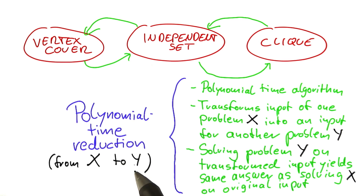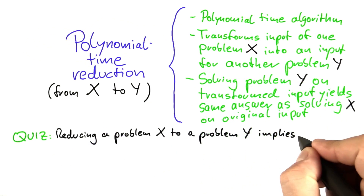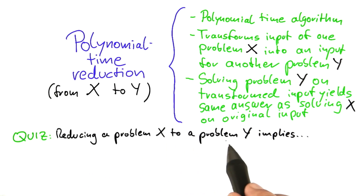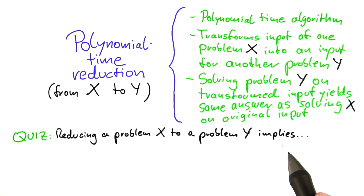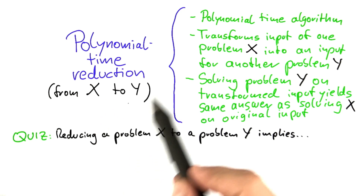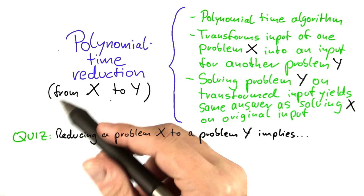You can take a problem x and show that the problem y is powerful enough to solve problem x. In order to help you wrap your head a little bit more around polynomial time reductions, we'll do a little quiz here. I would like you to think about if we manage to reduce a problem x to another problem y, what does that imply? You should really give this some thought first to make sure that you understand the concept of reductions, because this is going to play a very important role in this unit and also in the next units.